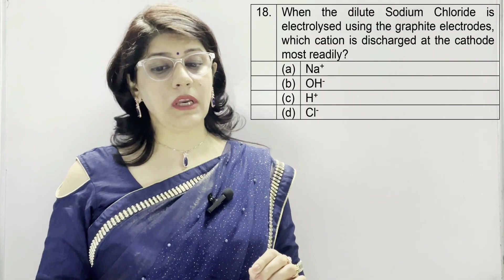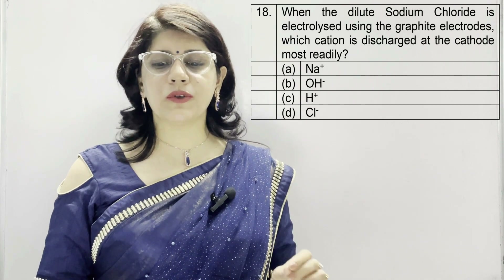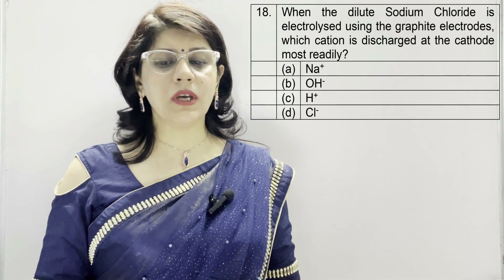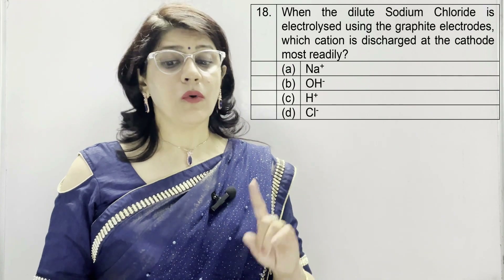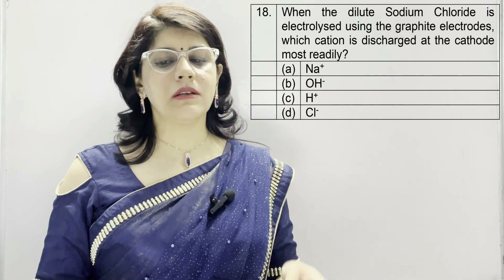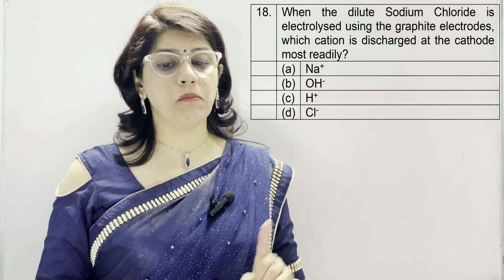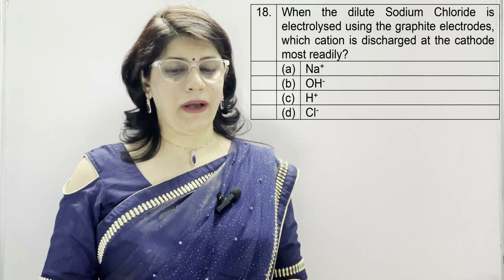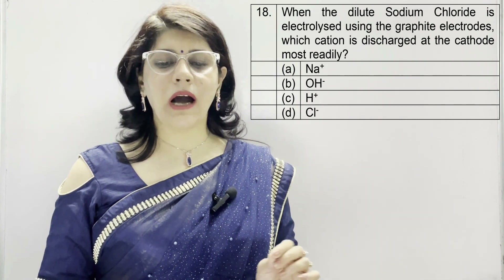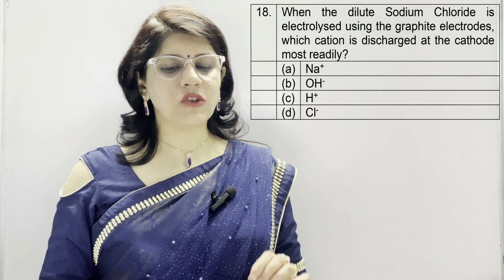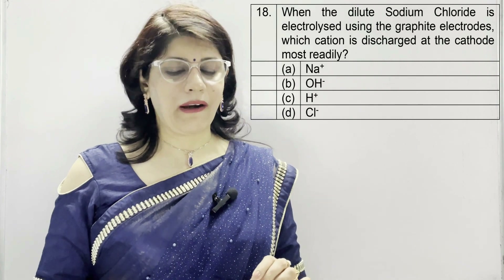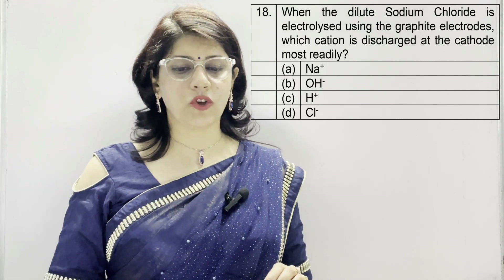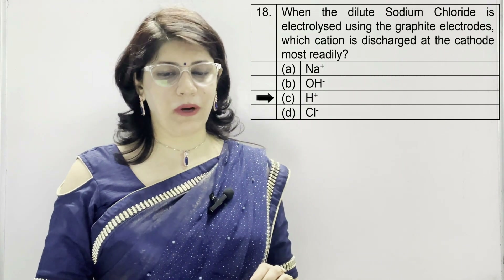In question number 18: when dilute sodium chloride is electrolyzed using graphite electrodes, which cation is discharged at the cathode most readily? A: sodium ion, B: hydroxide ion, C: H plus hydride ion, D: chloride. The correct option is C — H plus.